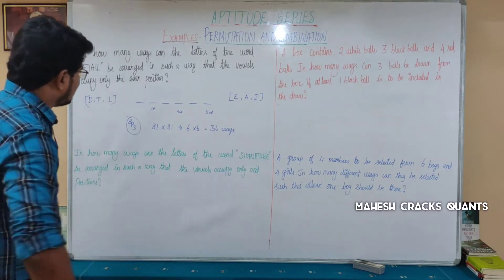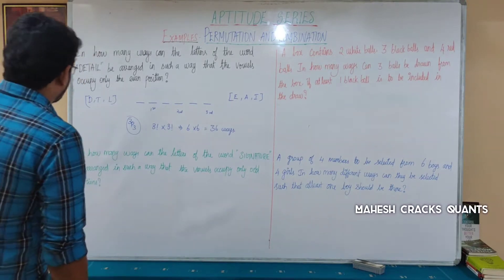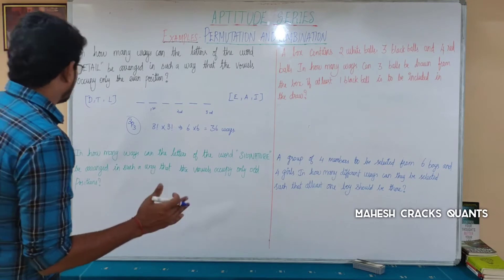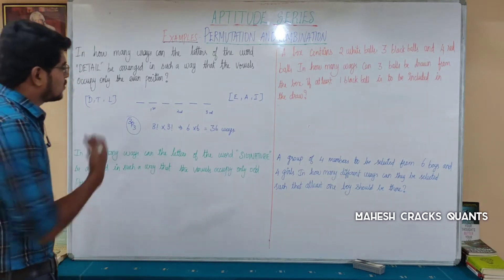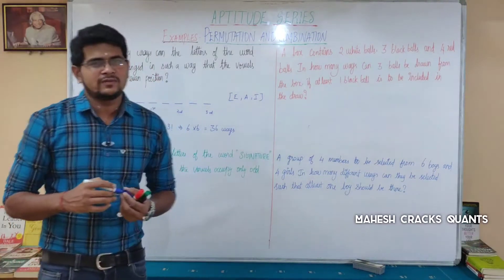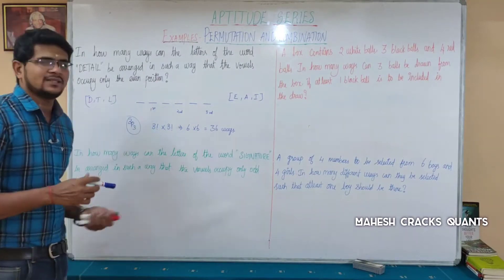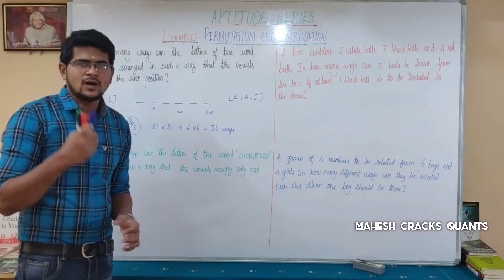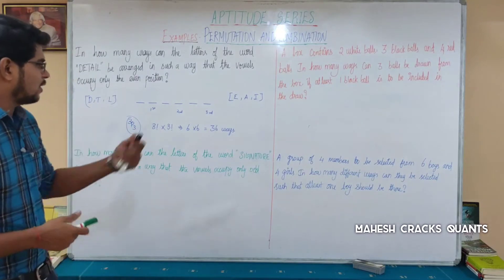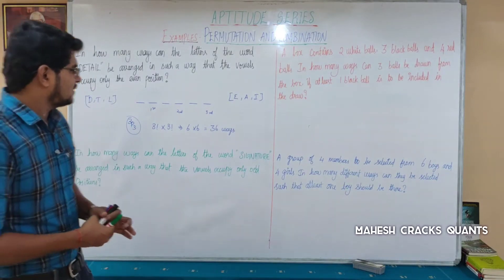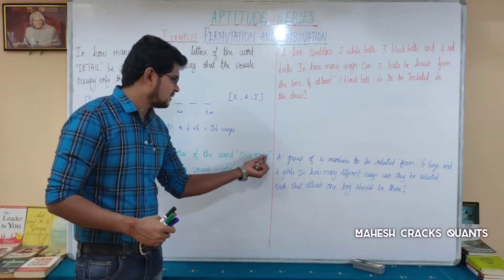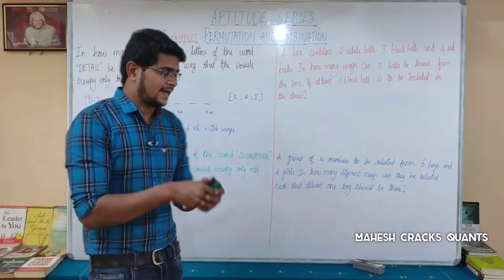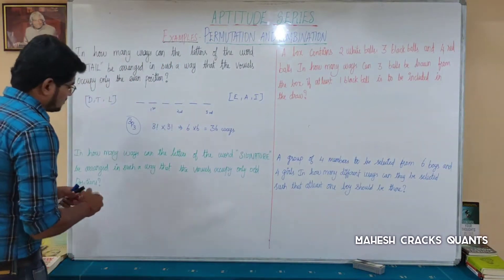Next question: in how many ways can the letters of the word SIGNATURE be arranged such that the vowels are only in odd positions? There are 9 letters total, giving us 9 spaces.